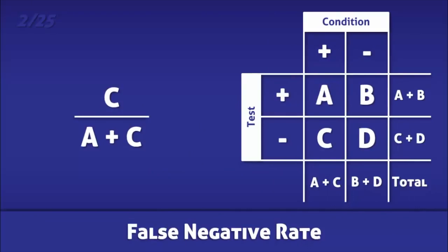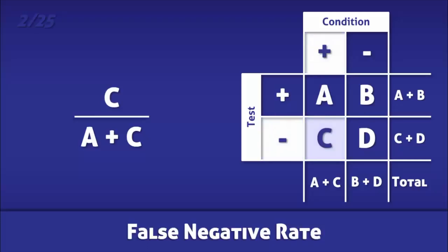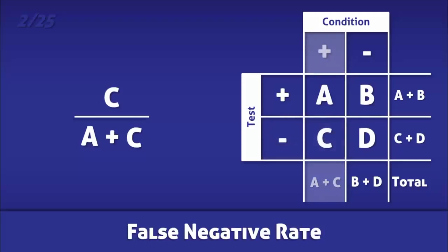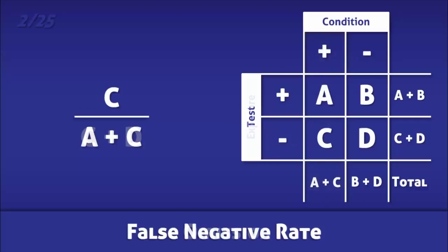The false negative rate is the proportion of people with a condition that tested negative for it. It is calculated by dividing the number of people that incorrectly tested negative by the total number of people with the condition.